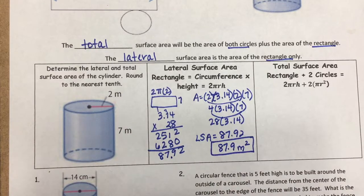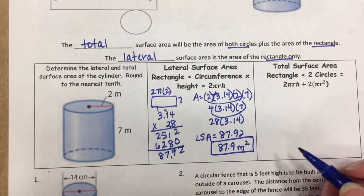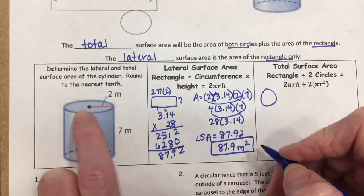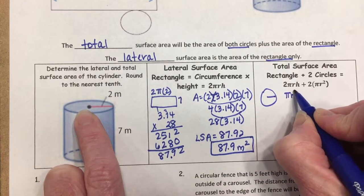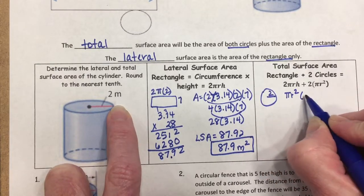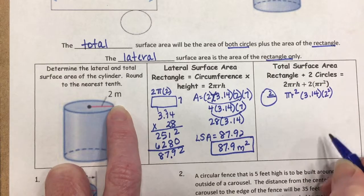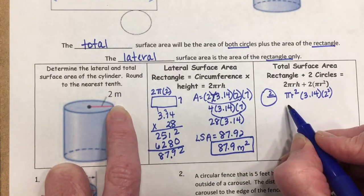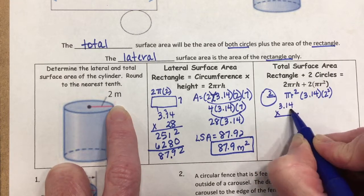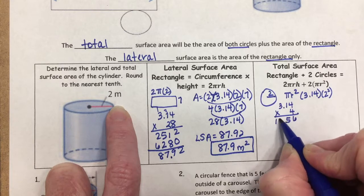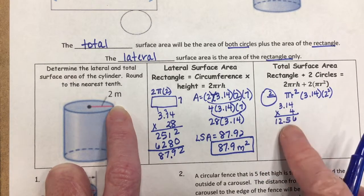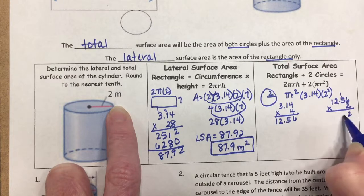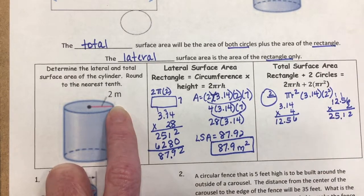For the total surface area, take the rectangle (87.92) and add both circles. The area of one circle is pi r squared: 3.14 times 2 squared equals 3.14 times 4, which is 12.56. Two circles gives 12.56 times 2, which equals 25.12.